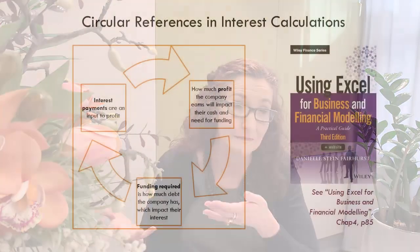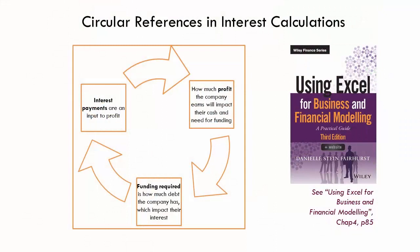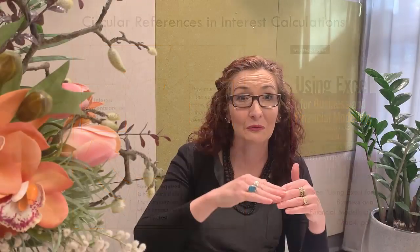For example, you've got your P&L, you've got your profit, which then drives your cash. The cash that you have is going to drive the debt, or the amount of funding that you're going to need, and your debt drives your interest. Your interest drives your profit — so the interest is an input to the P&L, the P&L drives your profit, the profit drives your cash — and you end up with a circular reference. That's a really common problem.